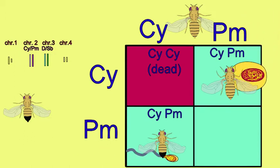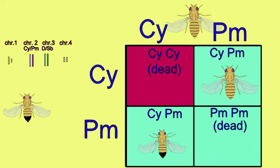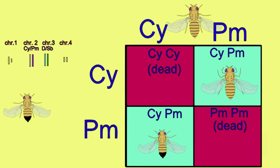If a curly-bearing sperm fertilizes a plum-bearing ova or a plum-bearing sperm fuses with a curly-bearing ova, the embryo can survive. If an embryo receives a plum mutation from each parent, it will also die. Plum is homozygous lethal.